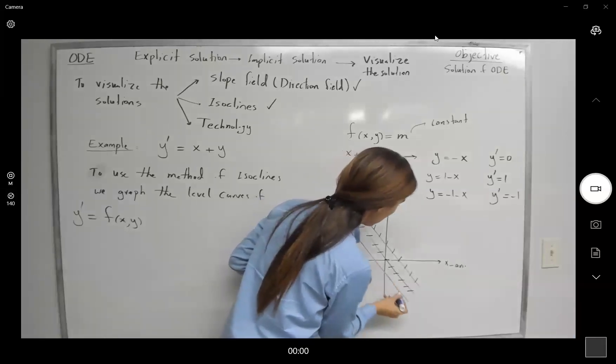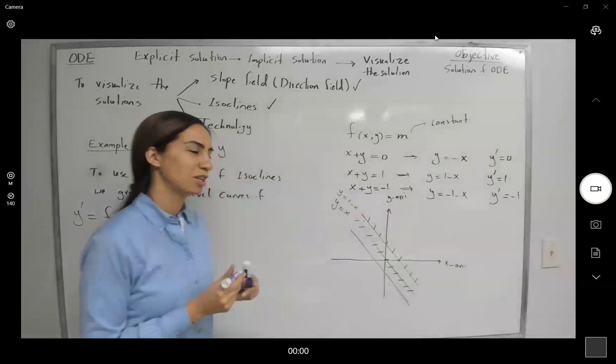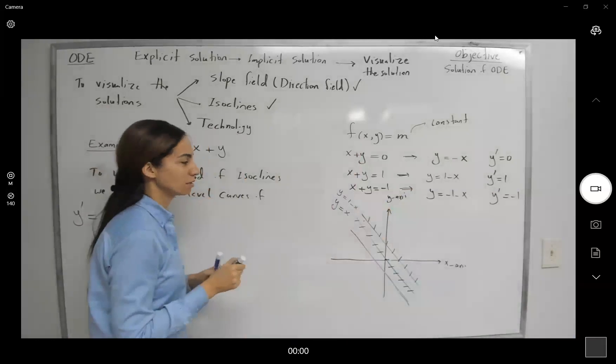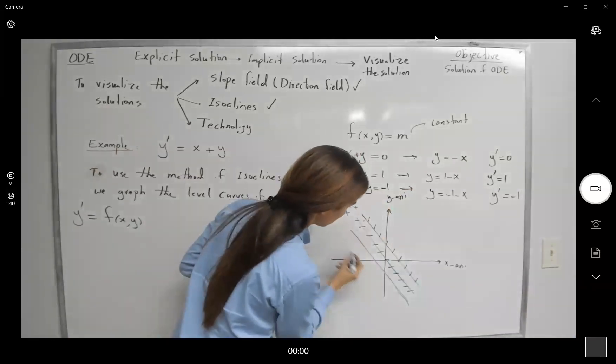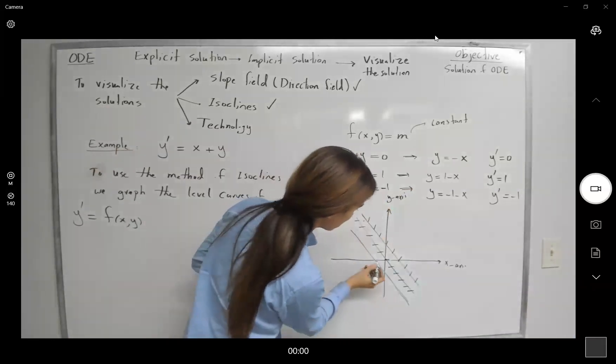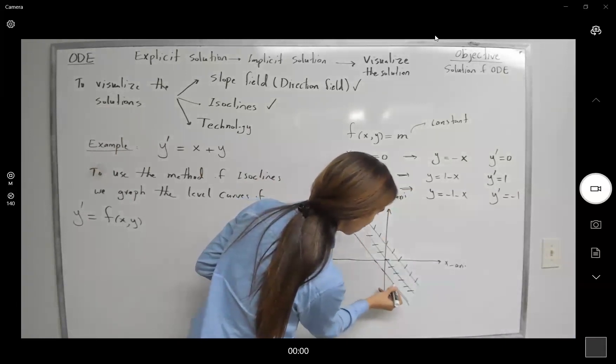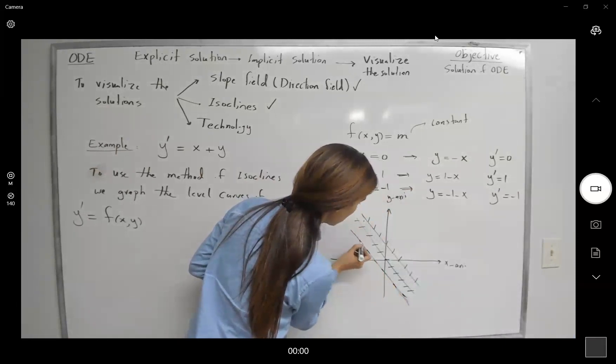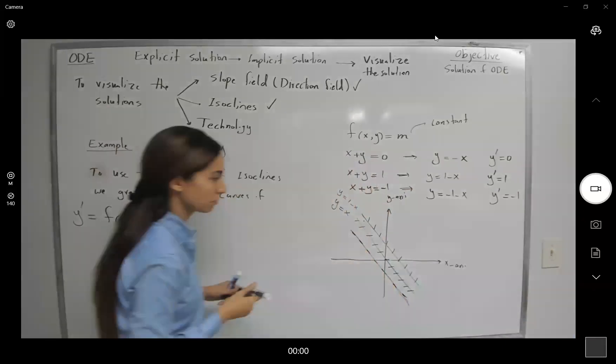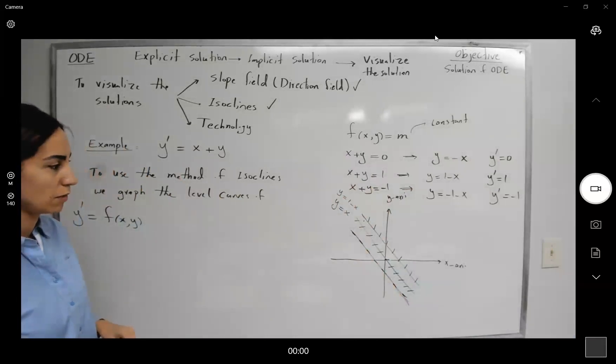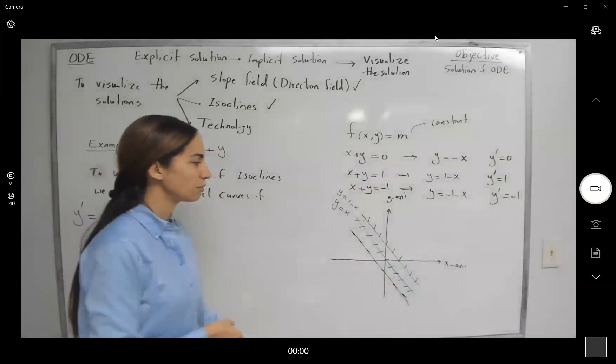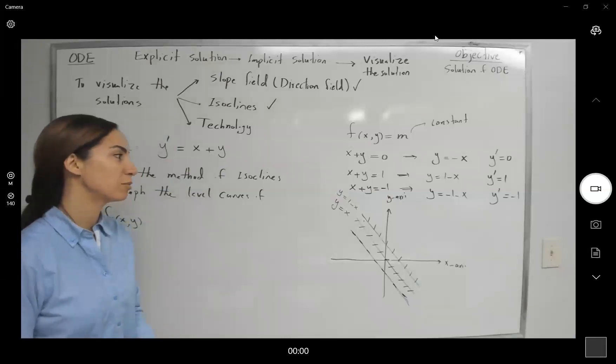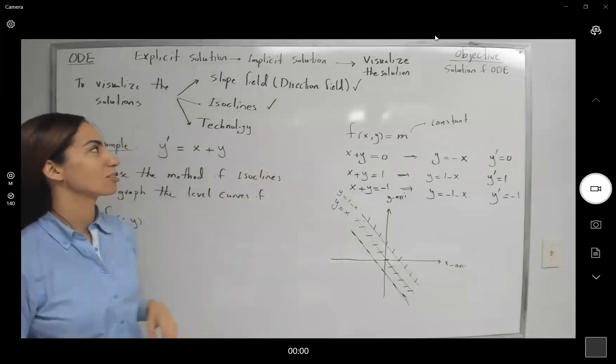But the line segments, those dashed small segments, they have slope negative 1, which means that they are decreasing small lines. And we continue this process. It helps us to actually visualize the solution sets, the family of the solutions using isoclines.